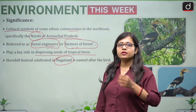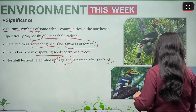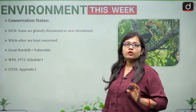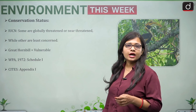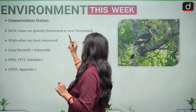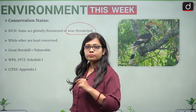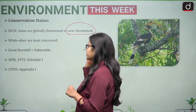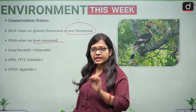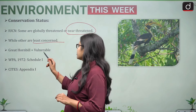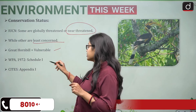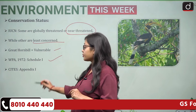Regarding conservation status, different hornbill species have different IUCN Red List statuses — some are globally threatened or near threatened, while others are least concerned. The great hornbill's IUCN status is Vulnerable. Under the Wildlife Protection Act 1972, hornbills come under Schedule One, and under CITES they are listed under Appendix One.